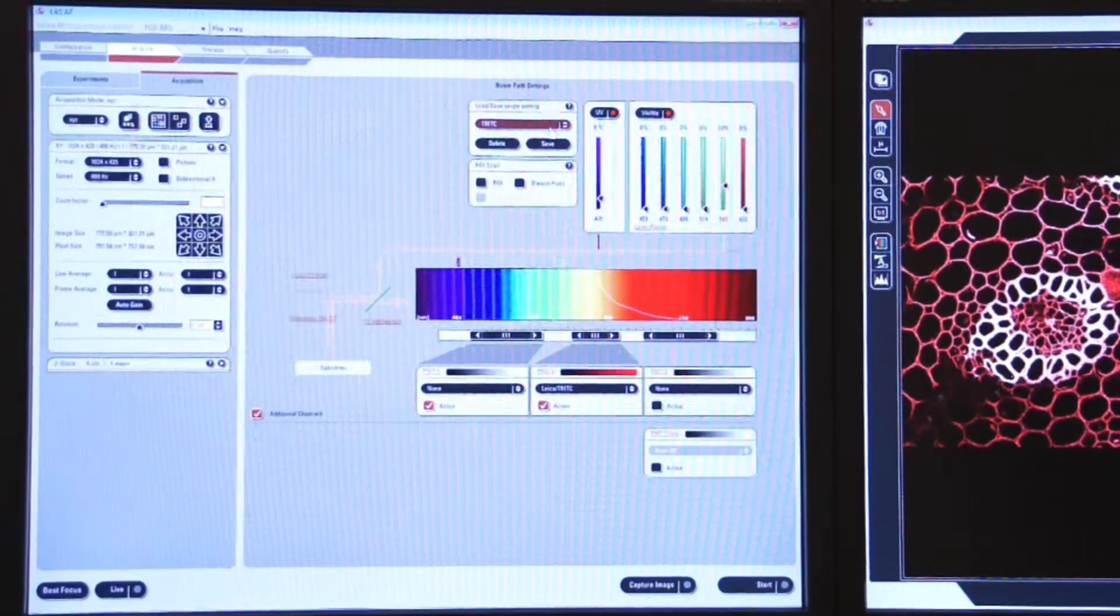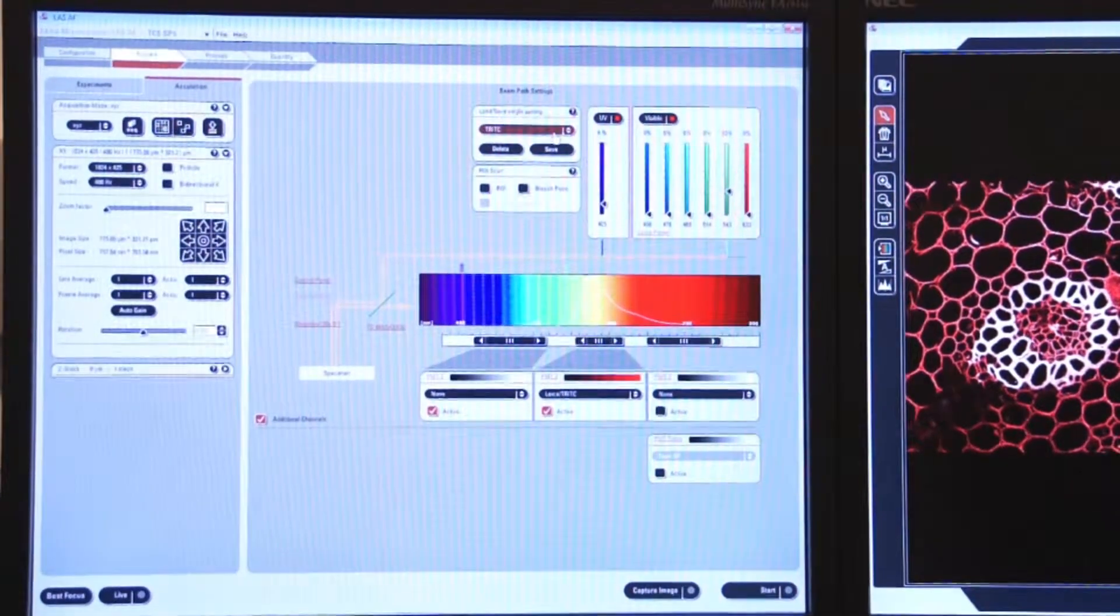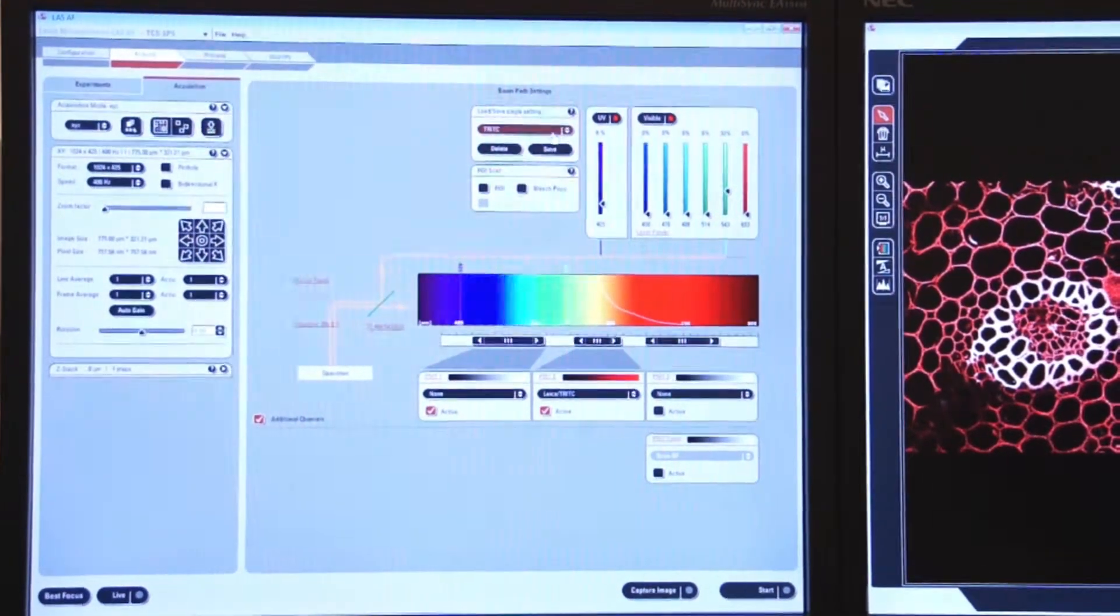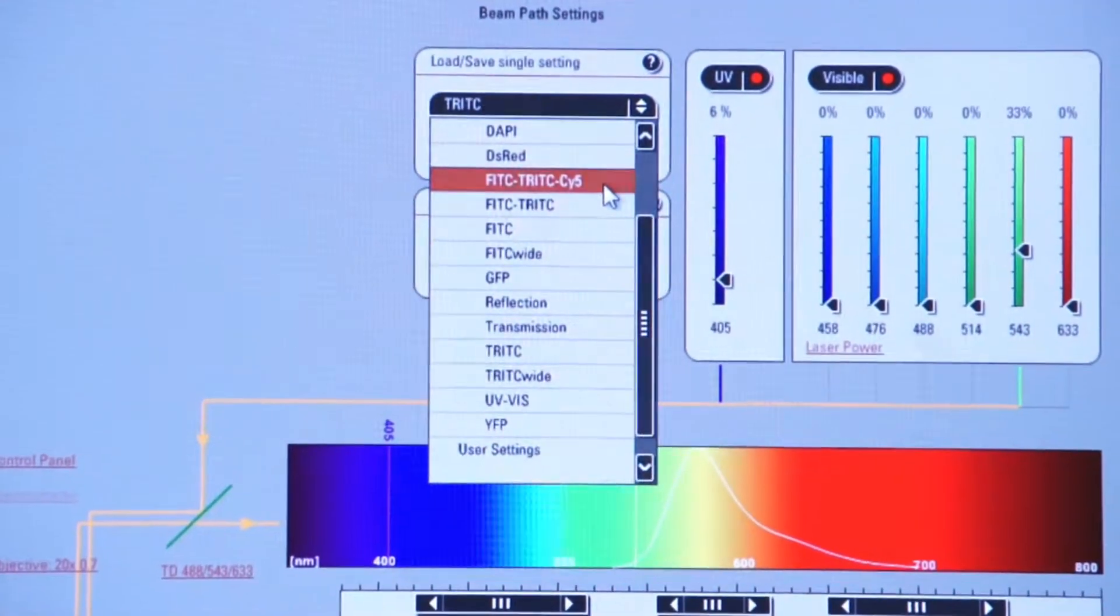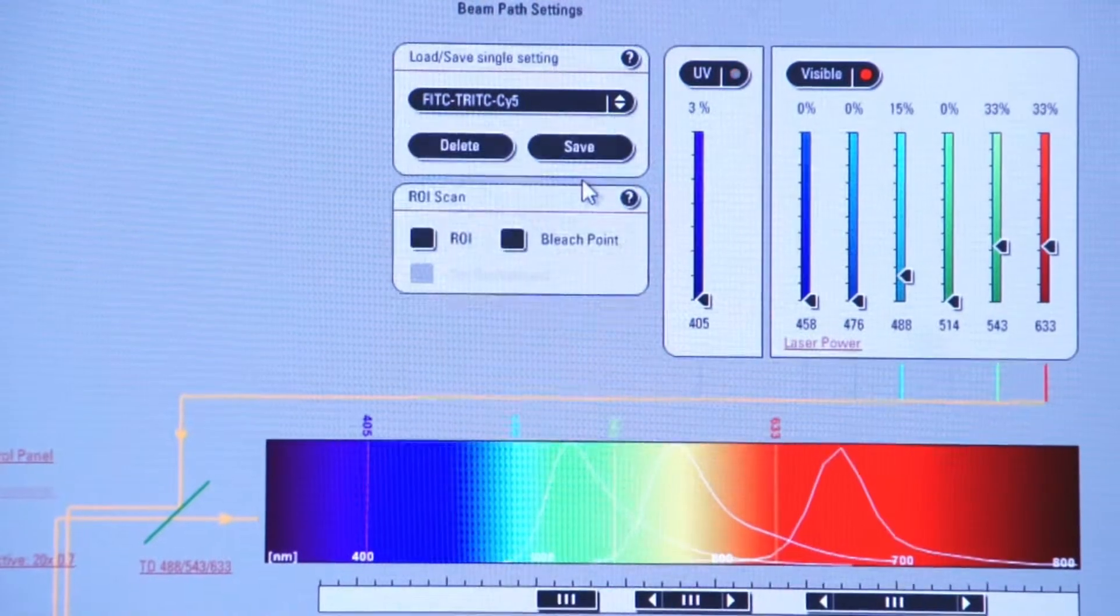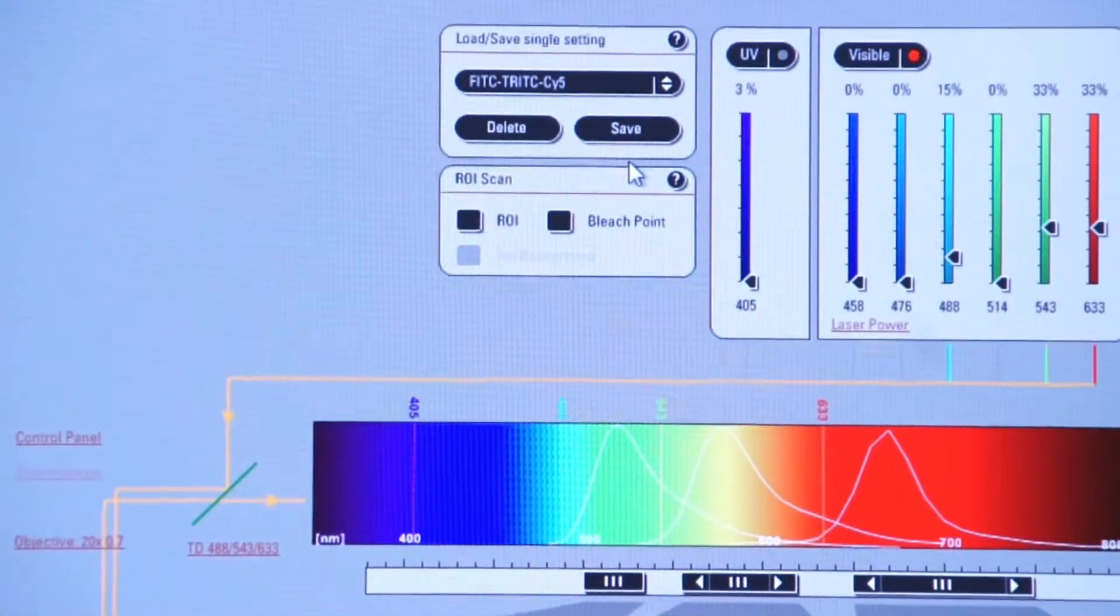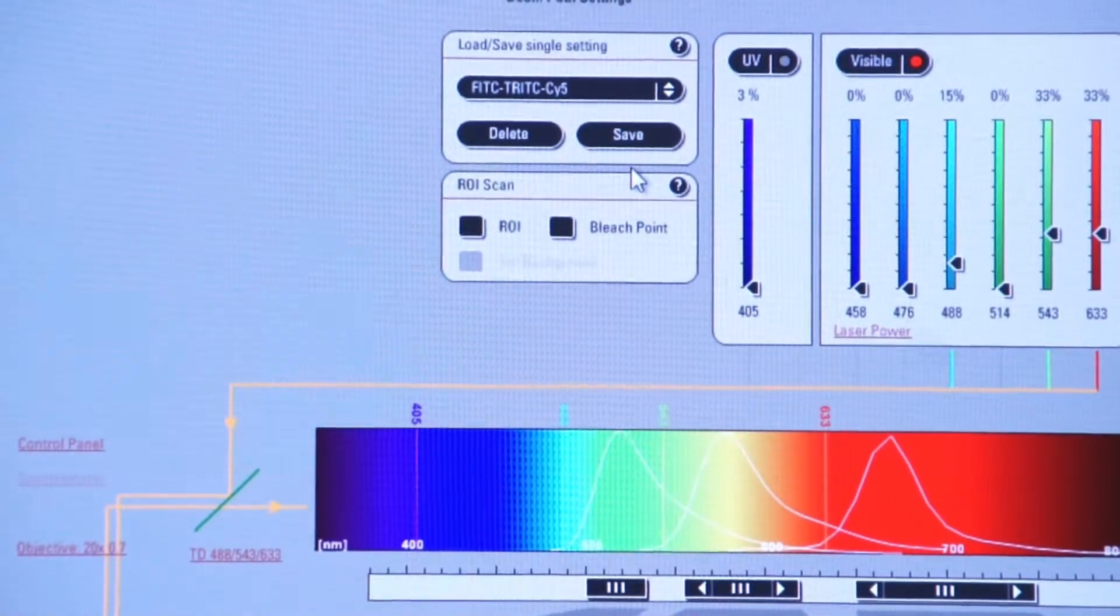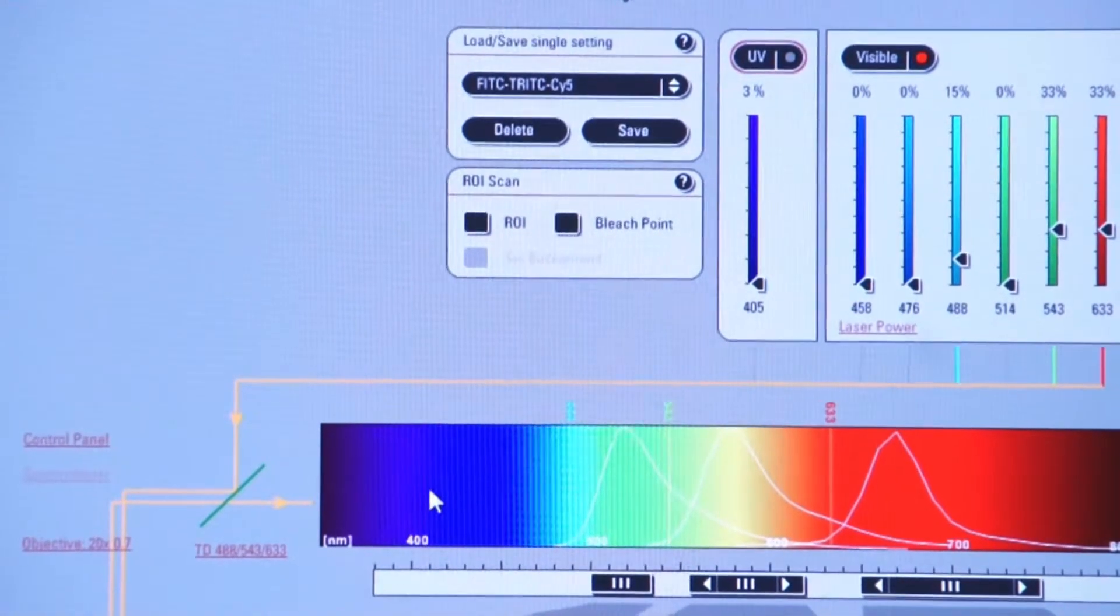Now at this time, let's select three different fluorophores and three PMTs and we'll look at our separate images. I'm going to click on the Leica settings and go to FITC, TRITC, CY5. This is now three fluorophores that we're going to be exciting based on three laser lines. I'm going to turn off the UV laser line since we don't need that.